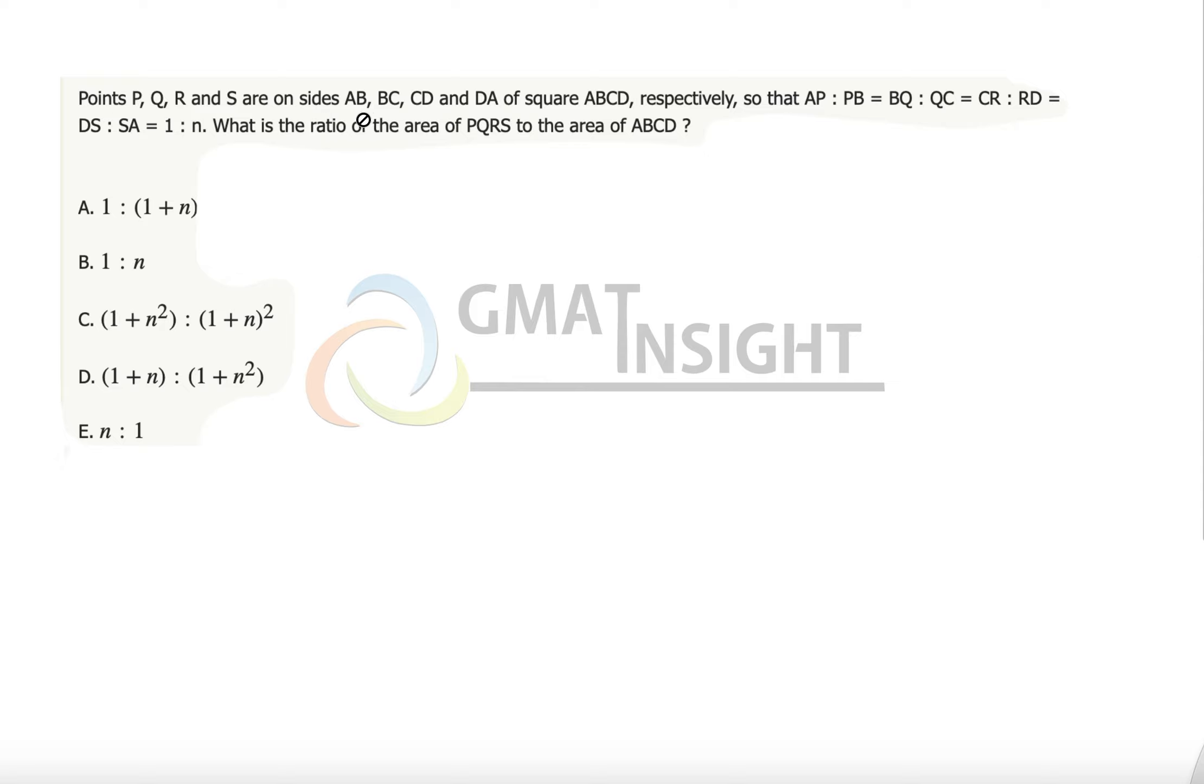Points P, Q, R, S are on the sides AB, BC, CD, DA of a square ABCD respectively, so that AP:PB equals BQ:QC equals CR:RD equals DS:SA, and that is equal to 1 over n.